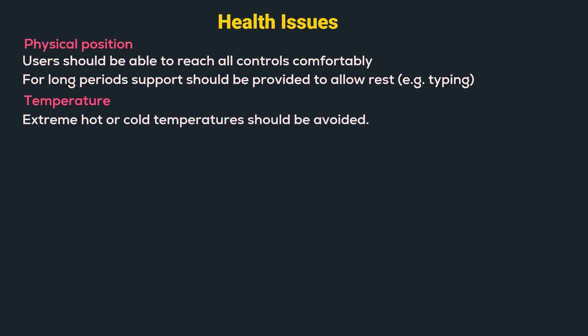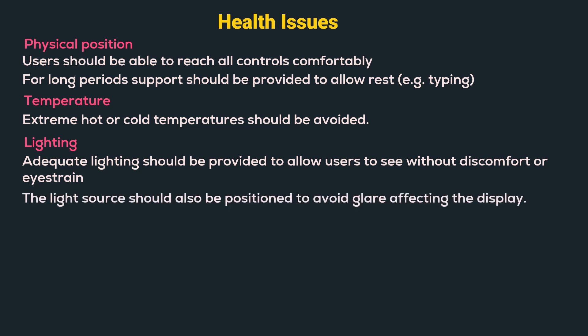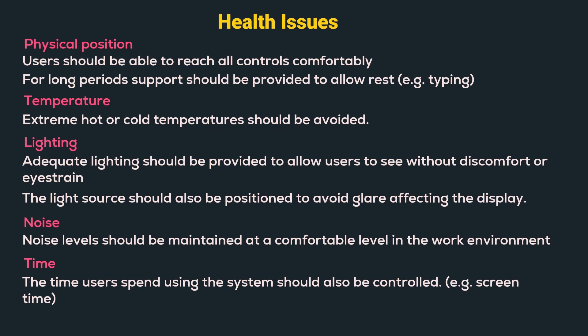The next health issue is temperature — extreme hot or cold temperatures should be avoided. Next is lighting: adequate lighting should be provided to allow users to see without discomfort or eyestrain, and the light source should be positioned to avoid glare affecting the display. Next is noise — noise levels should be maintained at a comfortable level in the work environment. Next is time — the time users spend using the system should be controlled, for example controlling screen time.